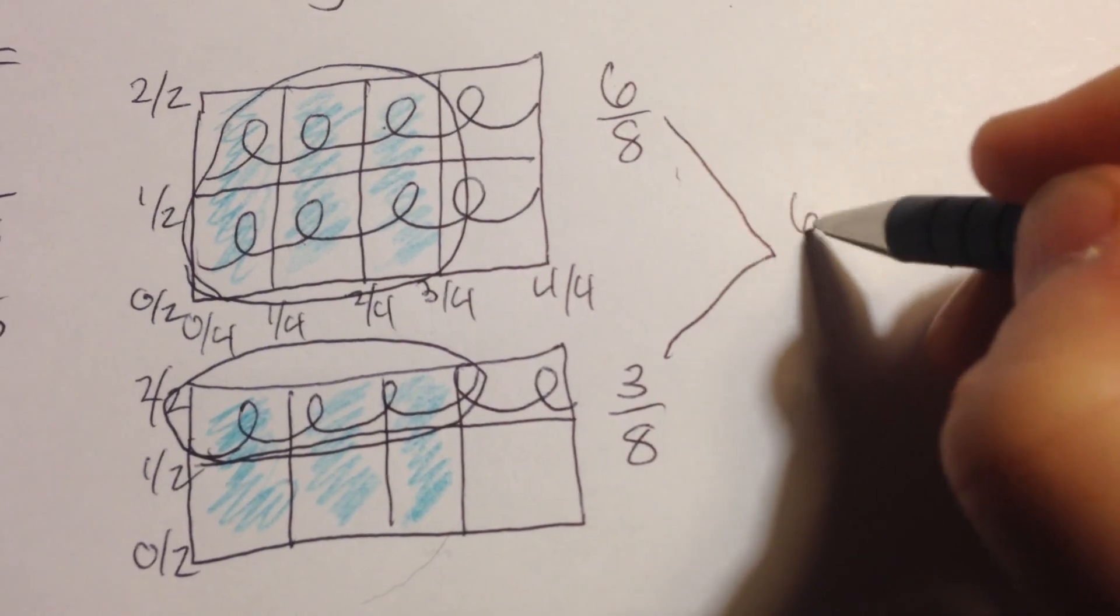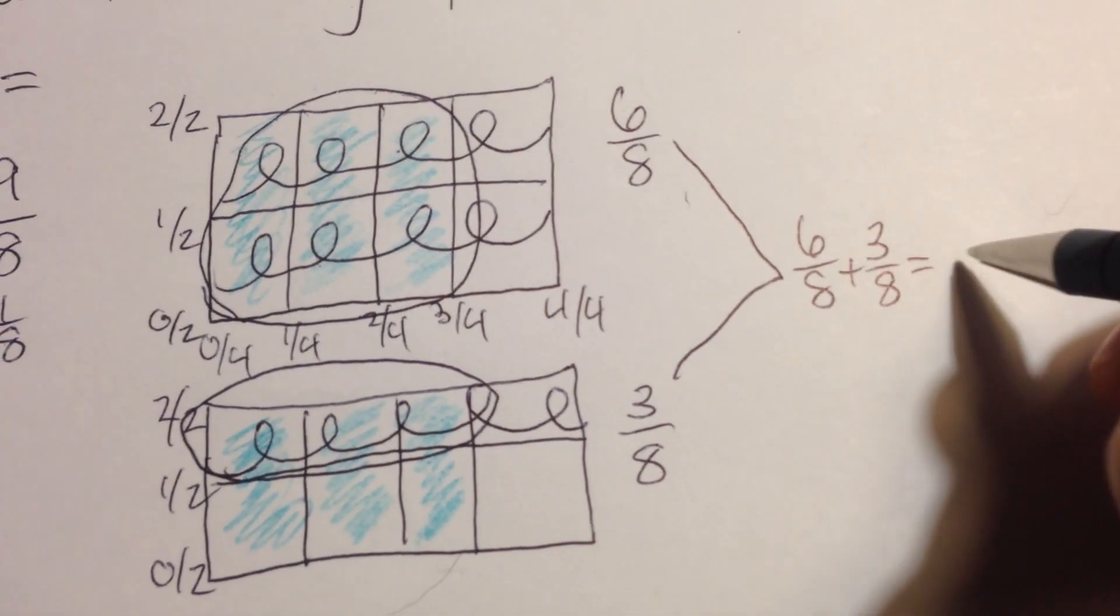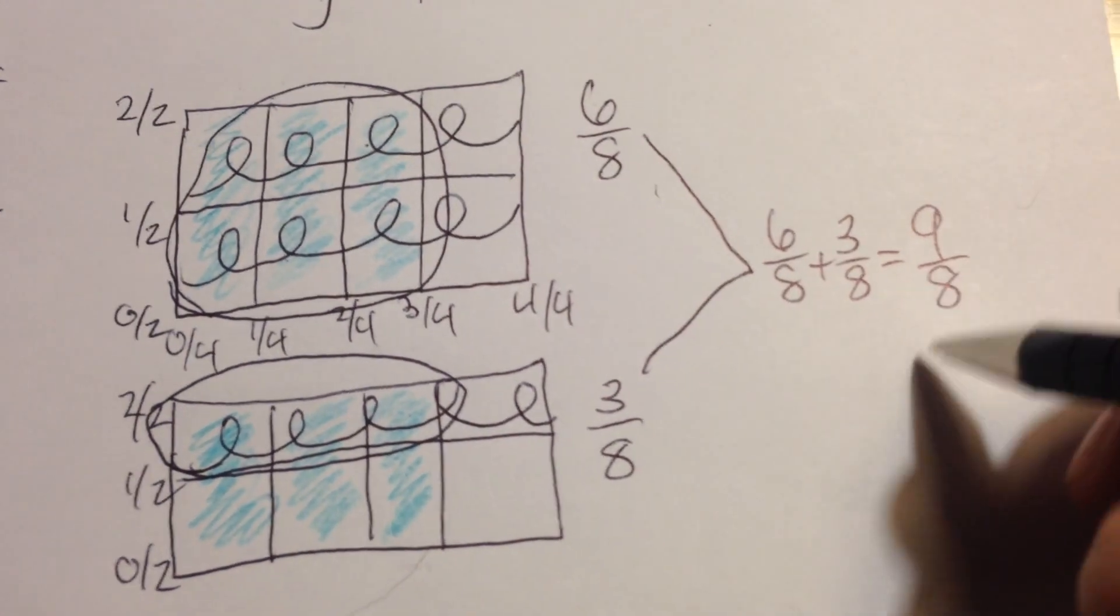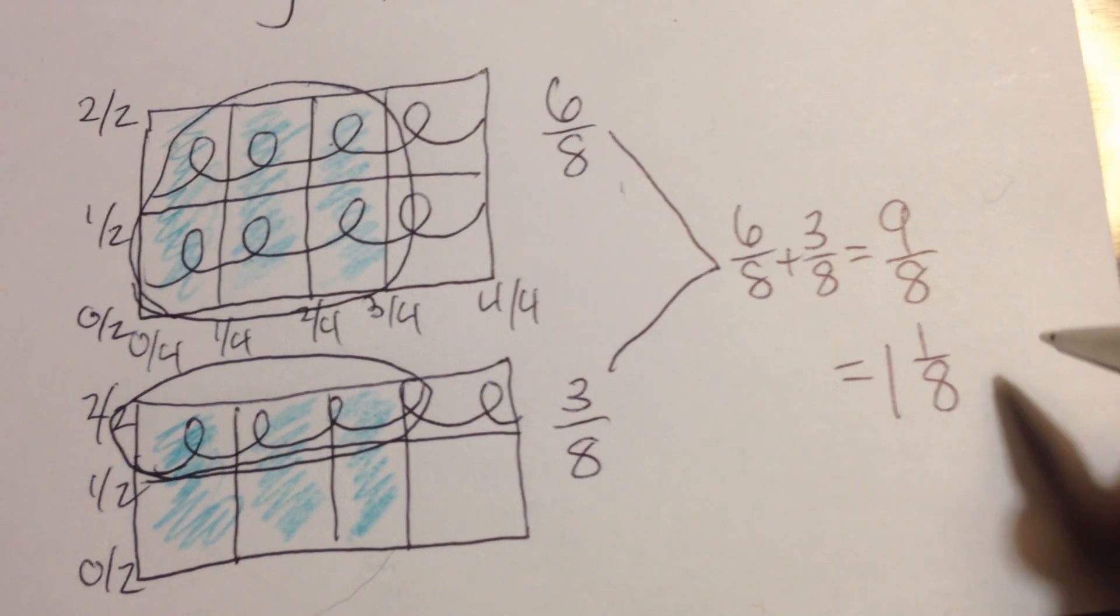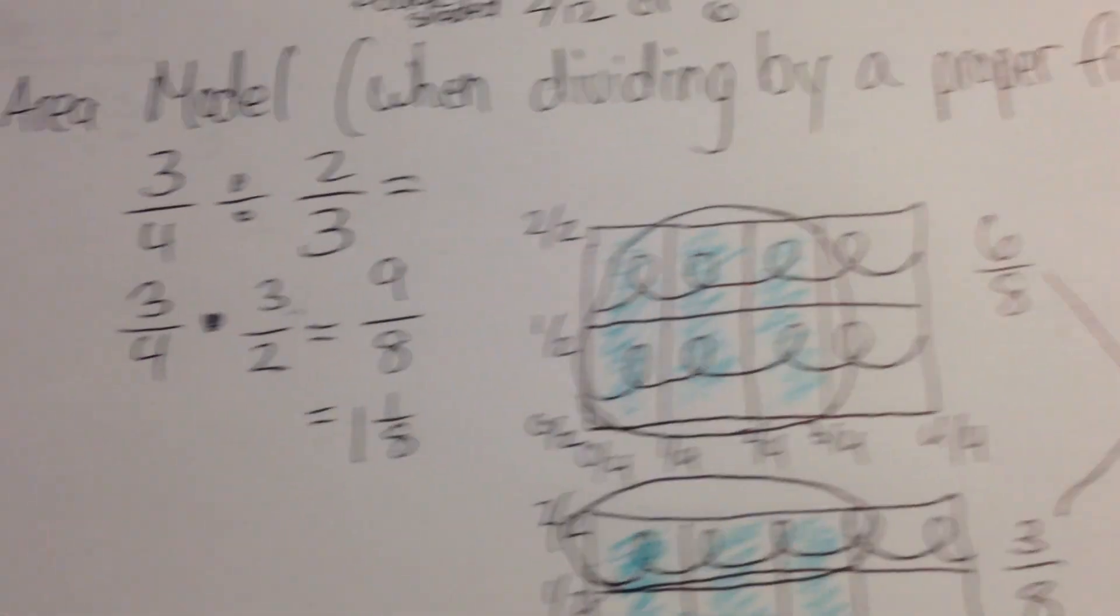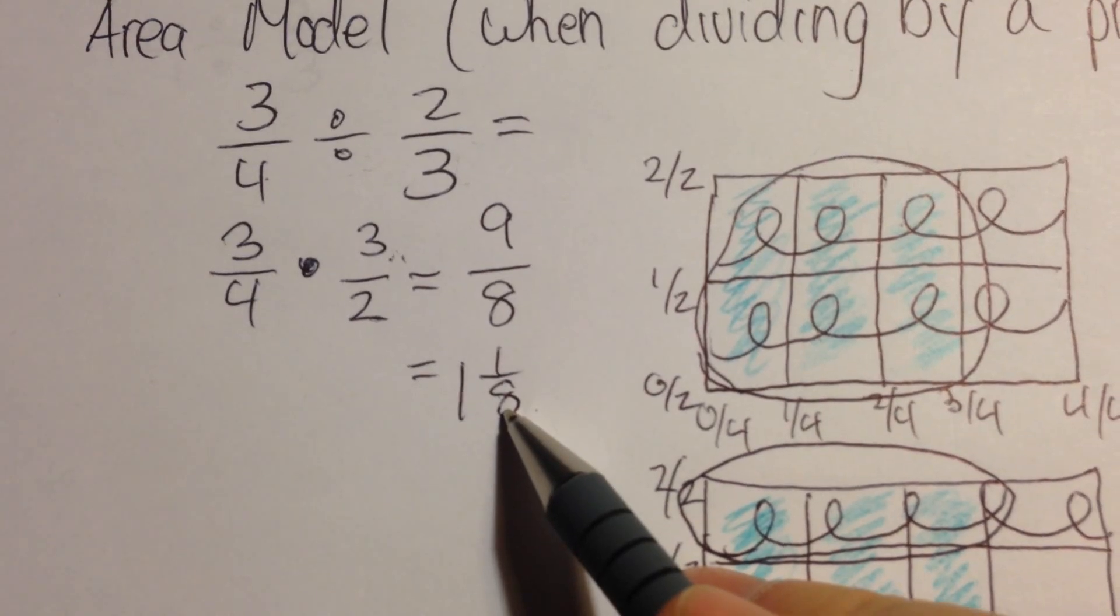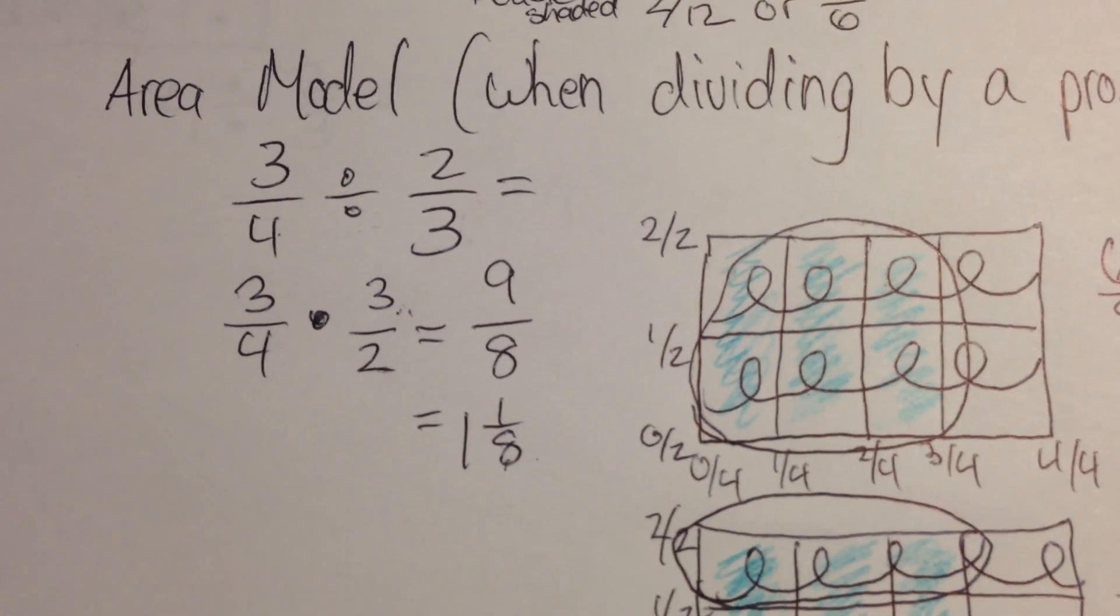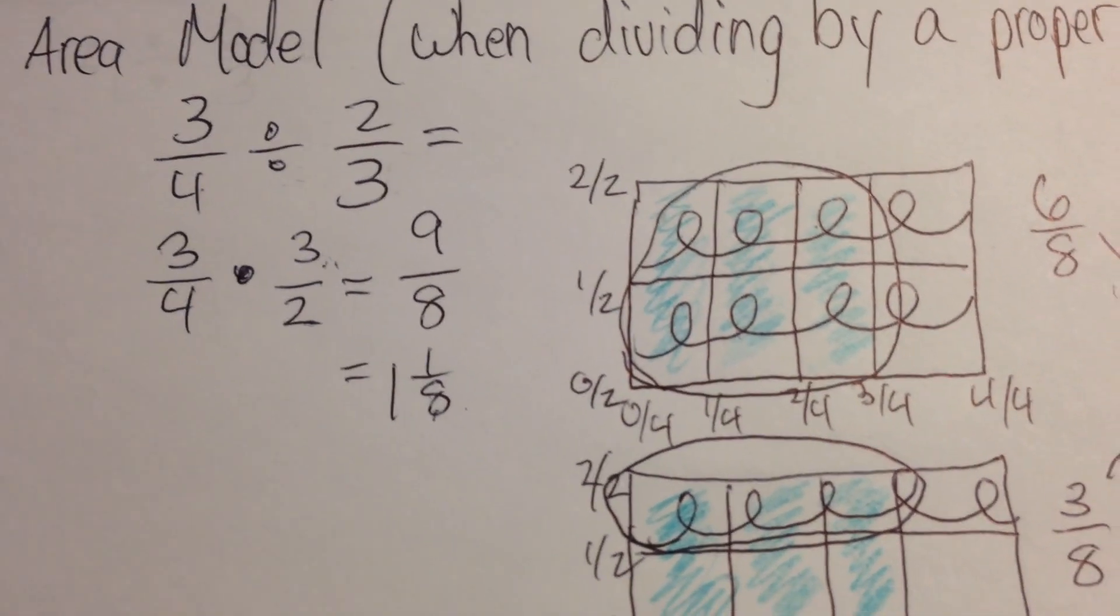I need to add these two together. 6 eighths plus 3 eighths will give me 9 eighths. And if I put that in simplest form, I have 1 and 1 eighth, which matches what I originally solved for, 1 and 1 eighth. I hope these help. I will add a tape diagram as well. Thank you.